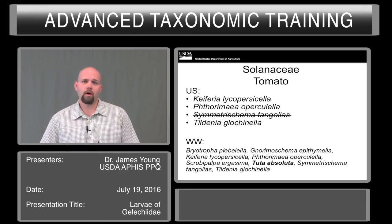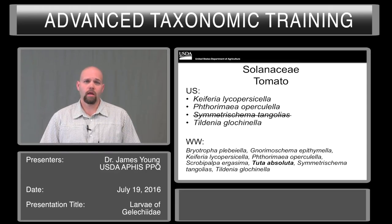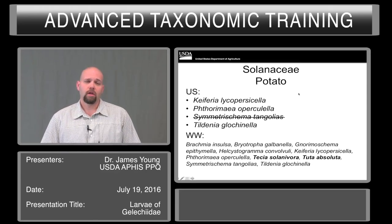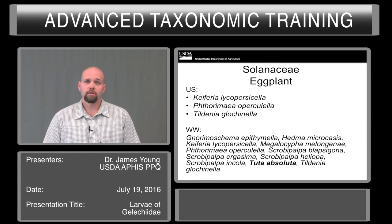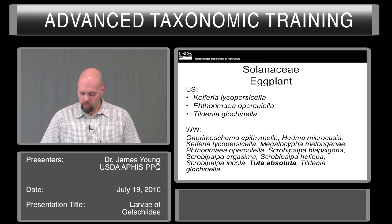On tomato, we have to worry about Keiferia, Leucoptera, which is a native species, Potato Tuber Worm, and Tecia. On potato, we have the same species here in North America. And again, on eggplant, we have the same three species. They overlap in their hosts and we can use them all in a single key.